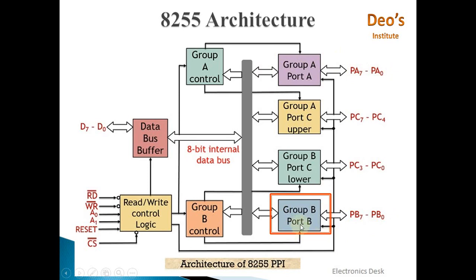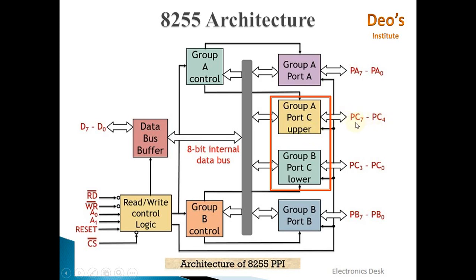Port B is similar to Port A — it also has 8 IO pins and a corresponding buffer. Port C is divided into two parts: Port C upper and Port C lower. Port C lower accepts input from or writes data to PC0 to PC3 via a 4-bit buffer, while Port C upper handles PC4 to PC7 with its own 4-bit buffer.